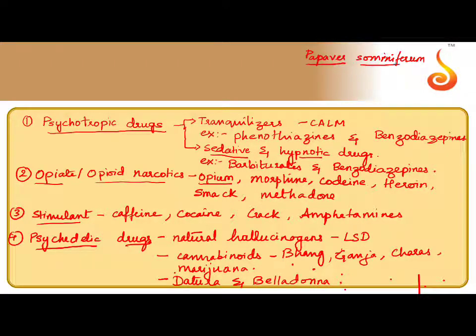This comes as a one-marker question in your PU exam, so it is important. Opium, morphine, codeine, heroin, smack, and methadone are mainly painkillers — they relieve and bring down the pain. So we can call them painkillers, or also analgesics.